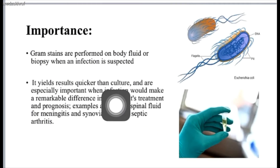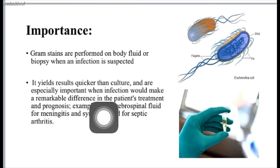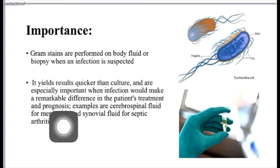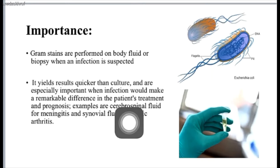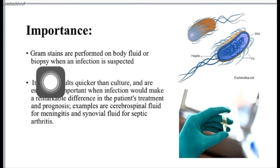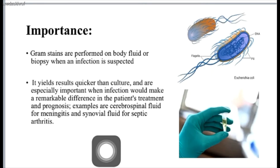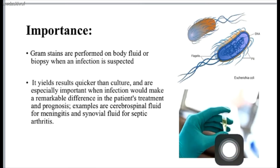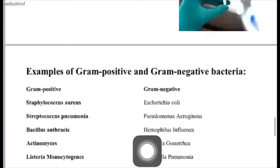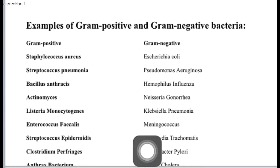The importance of this procedure is that it is rapid — quicker than cultures — and provides a remarkable difference when making patient treatment or diagnosis decisions. For example, in meningitis we perform a Gram stain on cerebrospinal fluid. It is also performed on body fluids and biopsy when an infection is suspected. Here you can see the CSF — cerebrospinal fluid.